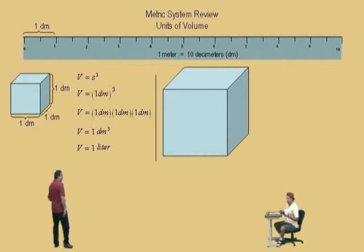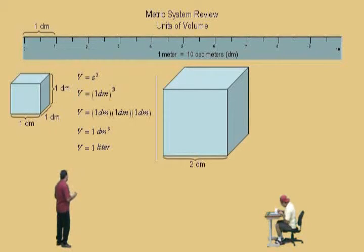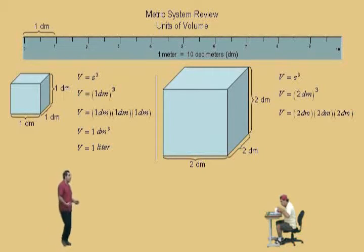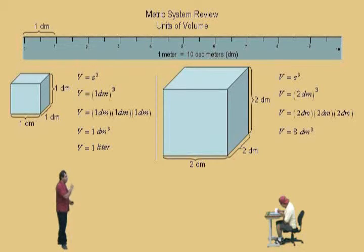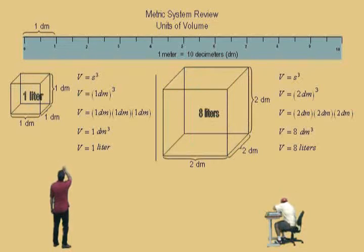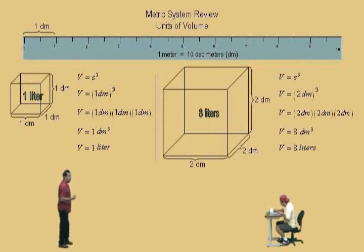So let's bring a bigger box up here, Charlie. This box is two decimeters long, its width is two decimeters, and its height is two decimeters. It is a cube again with a side length of two decimeters. If we go ahead and calculate the volume, which is side length cubed, we get two decimeters cubed — which is two times two times two decimeters — which is eight decimeters cubed. Remember, one decimeter cubed is the same as one liter, so eight decimeters cubed is the same as eight liters. That cube right there can hold eight liters of some liquid, because that's its volume.